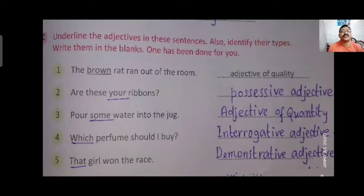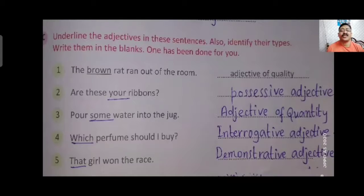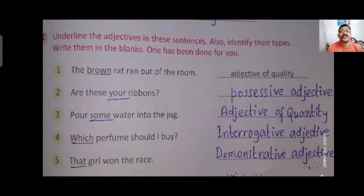Part C: Underline the adjectives in each sentence and write their types. First: 'A brown rat ran out of the room.' Brown is adjective of quality — it describes the color, which is the quality of the noun. Second: 'Are these your ribbons?' Your is possessive adjective — the ribbons belong to you. Third: 'Pour some water into the jug.' Some is adjective of quantity — water cannot be counted. Fourth: 'Which perfume should I buy?' Which ends with a question mark, so it is an interrogative adjective. Fifth: 'That girl won the race.' That is demonstrative adjective — we are pointing out that girl.